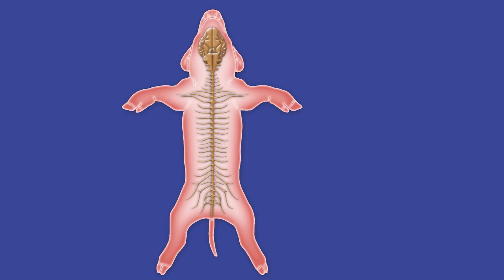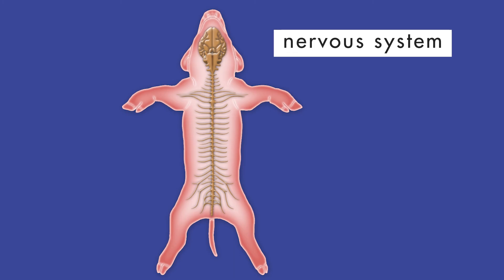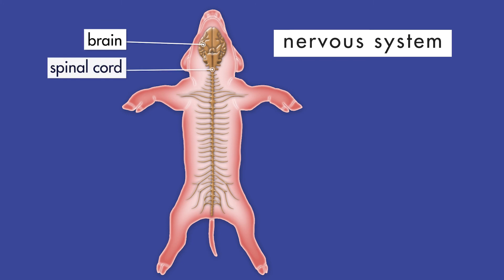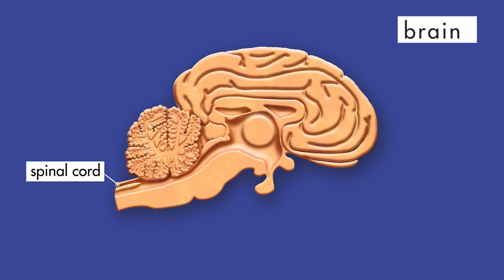Now that we have completed our examination of the circulatory system of the pig, we will take a look at its nervous system. The nervous system of a fetal pig consists of the brain, the spinal cord, and a network of nerves throughout the body. The fetal pig's brain has several structures similar to the brain of a human,